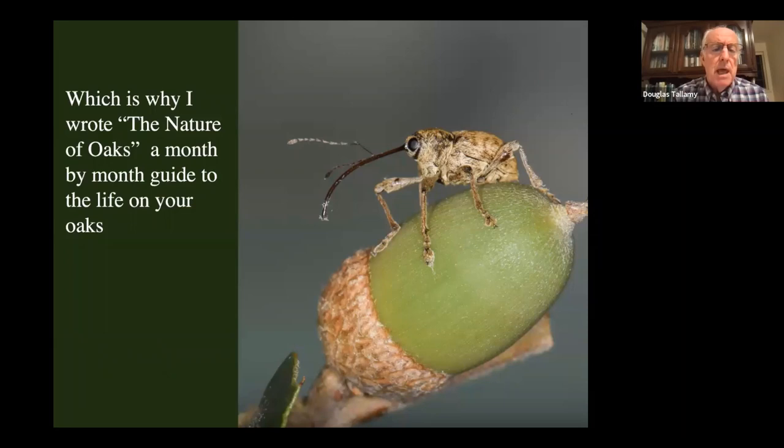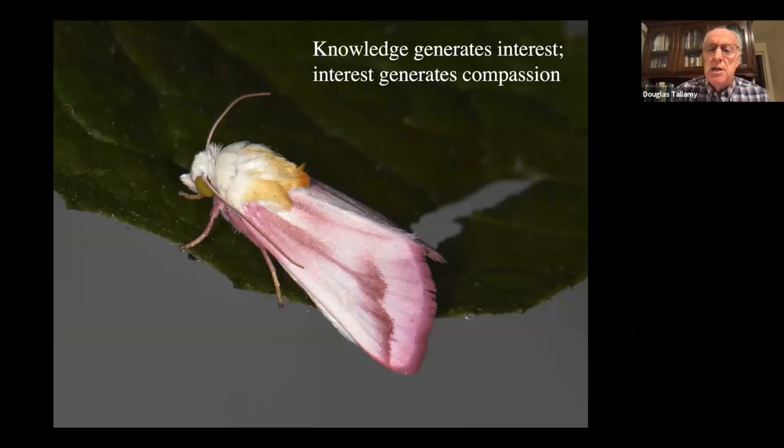It is a month-by-month guide to the life that occurs on your oaks so that you can learn about it. Long ago I learned that knowledge generates interest and interest often generates compassion, and we need an awful lot more compassion towards the natural world.